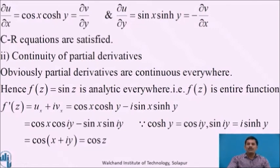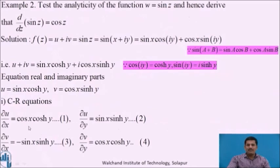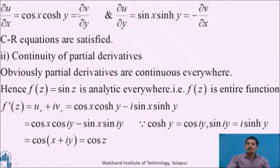For the second condition, all four partial derivatives contain products of sin, cos, sinh, and cosh, which are continuous functions. Since the product of two continuous functions is continuous, all four partial derivatives are continuous. Therefore, both sufficient conditions are satisfied, and f(z) = sin z is analytic everywhere — it is an entire function.